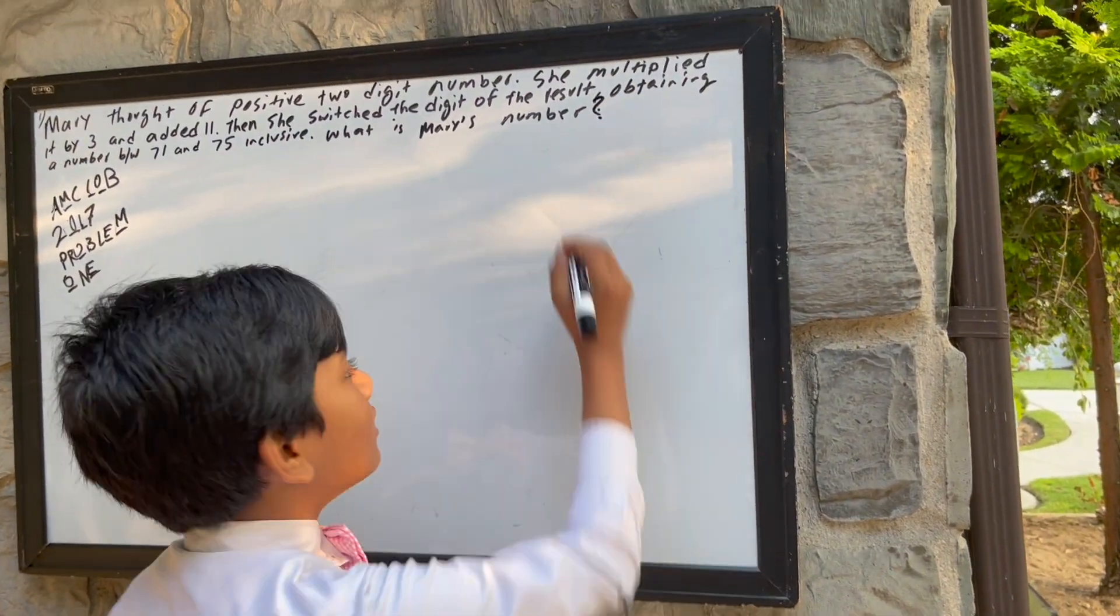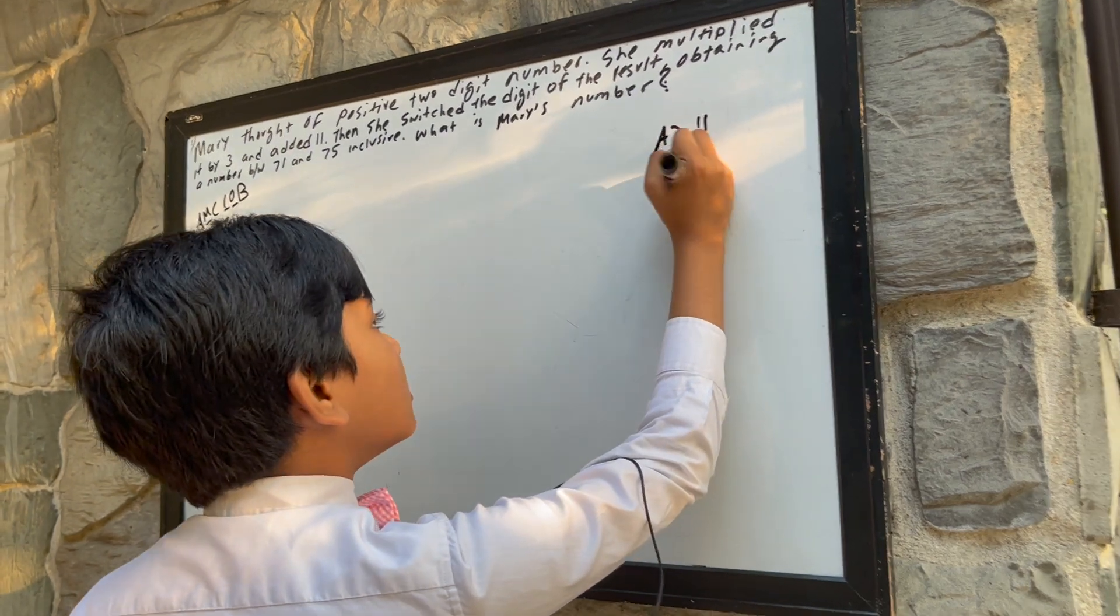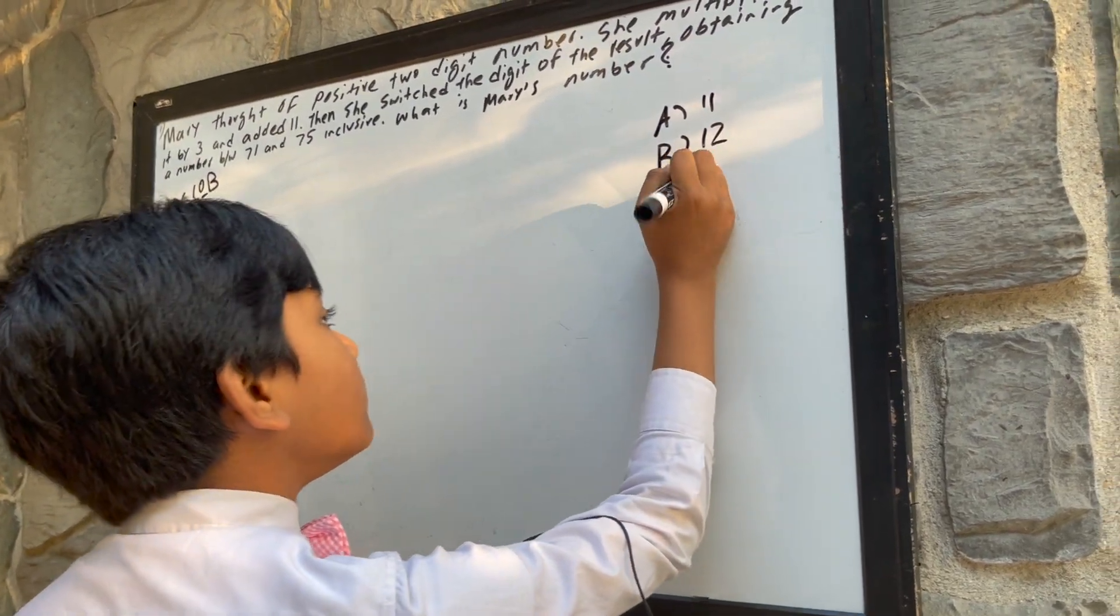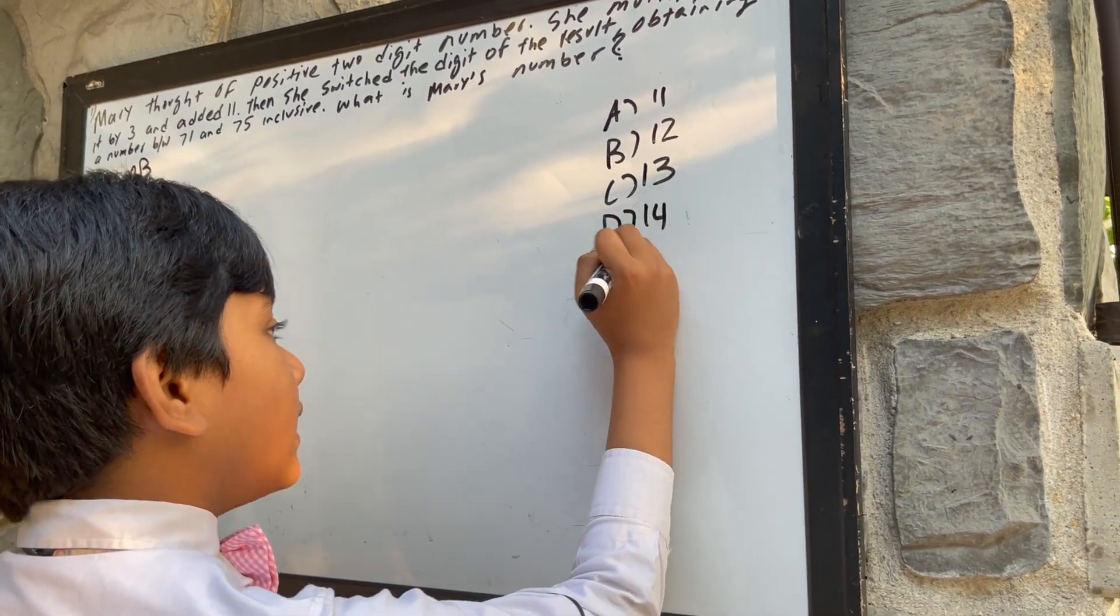What are the choices? A, 11; B, 12; C, 13; D, 14; and E, 15.